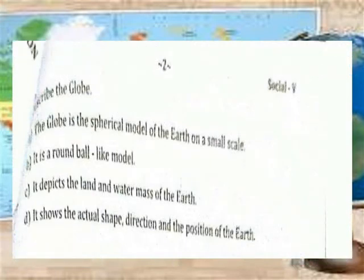The globe is a spherical model of the Earth on a small scale. It depicts the land and water bodies of the Earth. It shows the actual shape, direction, and position of the Earth.